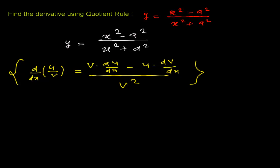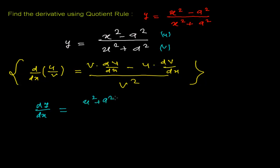So y is my function. I'm going to differentiate both sides with respect to x to get dy over dx. The second function — x squared plus a squared — I'll call v, and the first function I'll call u.